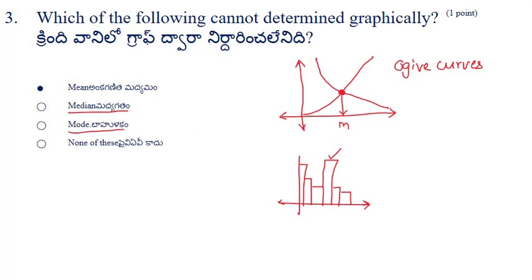The next problem: which of the following cannot be determined graphically? We can obtain the median from the ogives — the x-coordinate of the intersection point of the two ogives is the median. We can also obtain the mode from the histogram. However, we cannot obtain the mean from any graph. So the answer is mean.